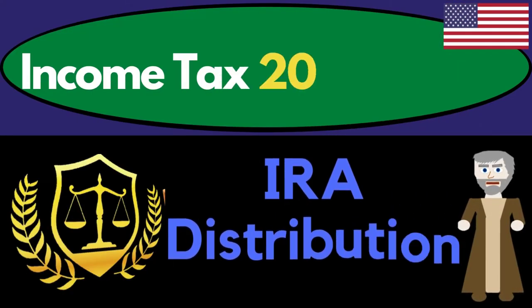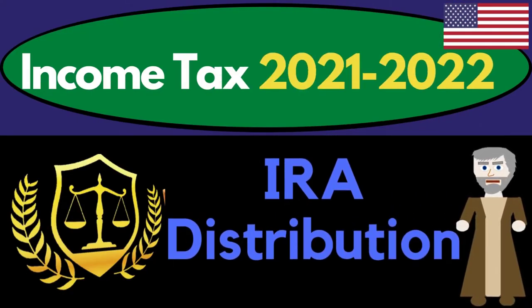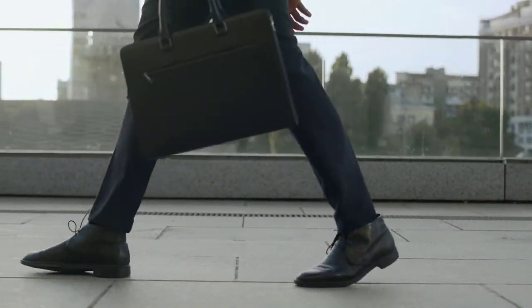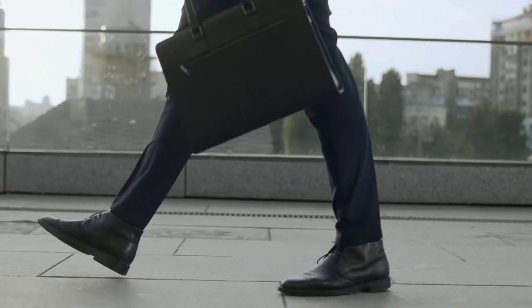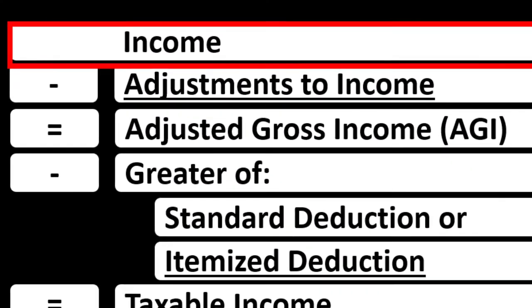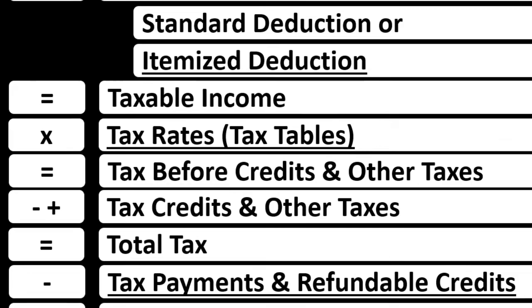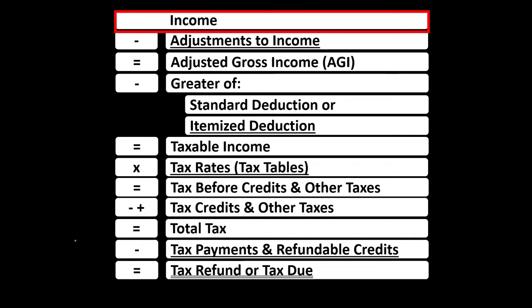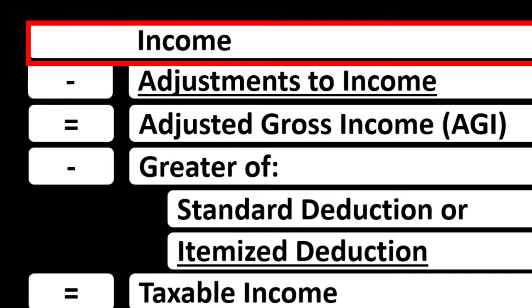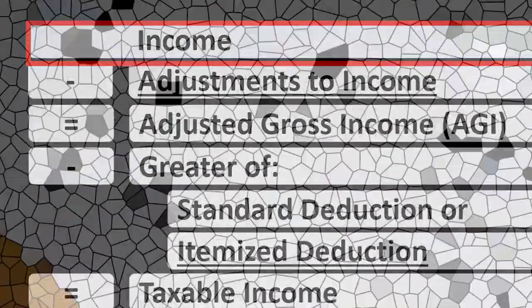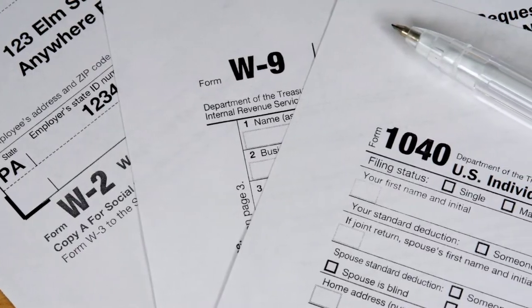Income Tax 2021-2022 IRA Distribution. Get ready to maximize your refunds. Here we are in the Income Tax Formula, still focused on line one, the income line. It looks deceptively simple with just one line, but remember this is the summary formula — many different things could feed into it, and many other schedules can flow into each of the lines.